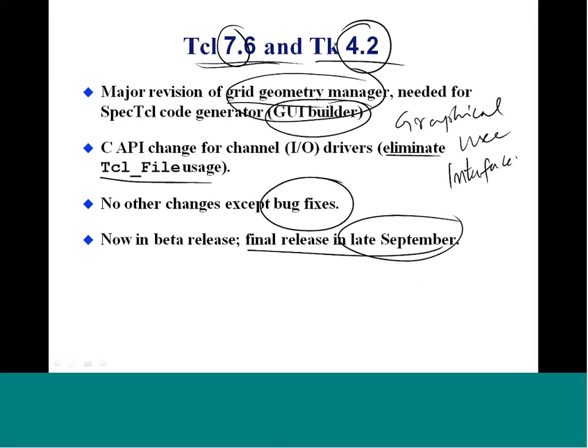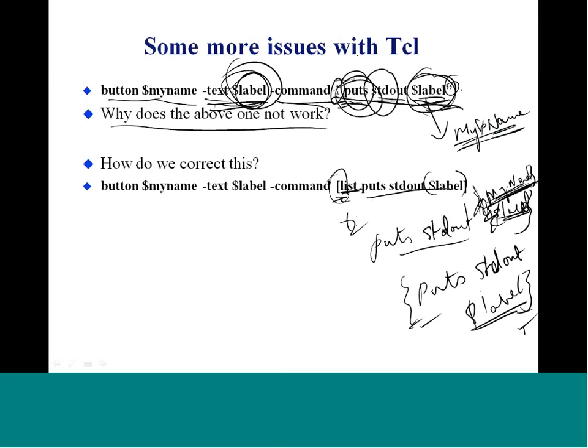In version 7.6 and 4.2, the main improvements over previous versions include: the grid geometry manager has been revised and is needed for the GUI builder. There are also C API changes for channel drivers, which will eliminate the Tcl file usage. There are also a whole bunch of bug fixes that went into these releases, and you should be able to find these releases already published.